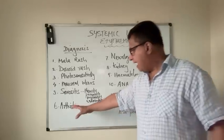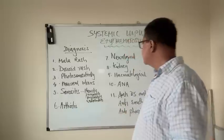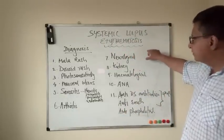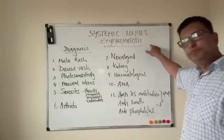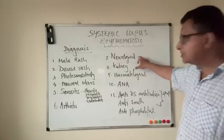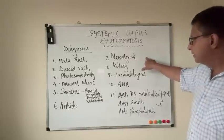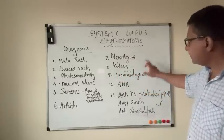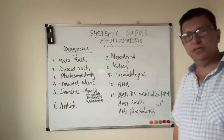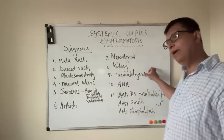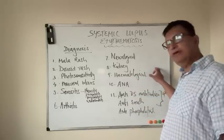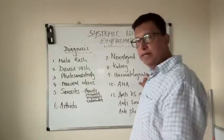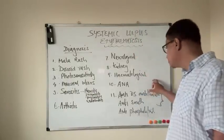It can affect the joints causing arthritis, and it can affect the brain causing neurological complications like seizures and psychosis. It can affect the kidneys causing renal disease. It can cause hematological abnormalities — especially low white cell count, anemia due to red blood cell involvement, and thrombocytopenia due to platelet involvement.